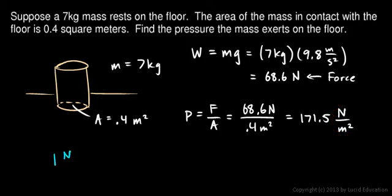One newton per square meter is called 1 pascal. P-A-S-C-A-L. And that's abbreviated Pa, capital P little a. 1 pascal. That's the metric, or SI, unit for pressure, 1 pascal.